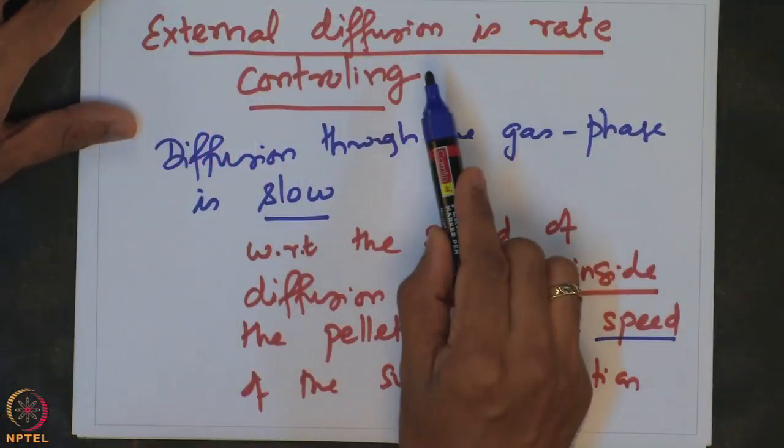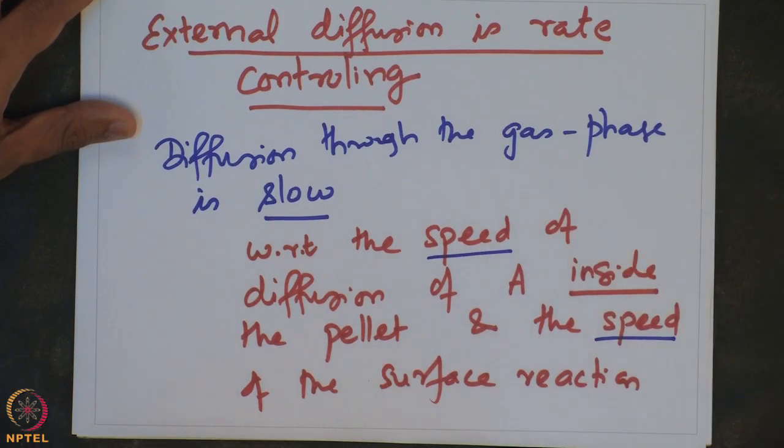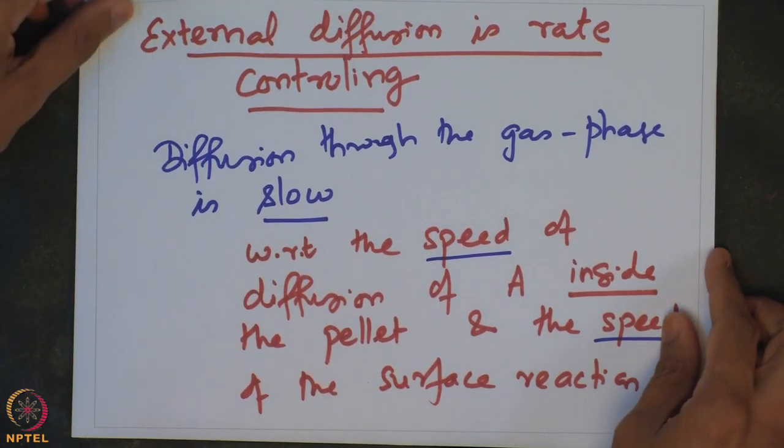This is important because if the species diffusion is slow to the catalyst pellet, then as soon as it reaches the surface, the internal diffusion is fast enough, and so the reaction is likely to happen very close to the exterior surface. Most of the catalyst particle pellet inside is actually unused. This poses a design challenge as to how to best utilize the catalyst material and the catalyst impregnated in the support. In future lectures, we will describe how to quantify the external diffusion process and identify whether external diffusion is rate controlling for a given system.